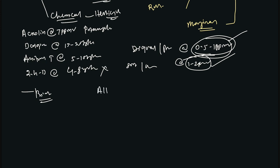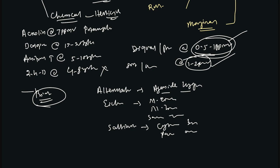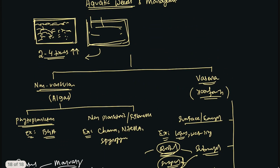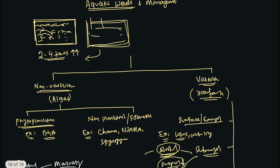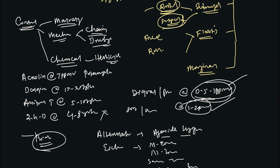To control Salvinia molesta, you can use the weevil Cyrtobagous salviniae and the grasshopper Paulinia acuminata. In this lecture, we have discussed what aquatic weeds are, their significance, their classification, and the different control measures — mechanical, chemical, and biological — that can be taken to manage aquatic weeds.